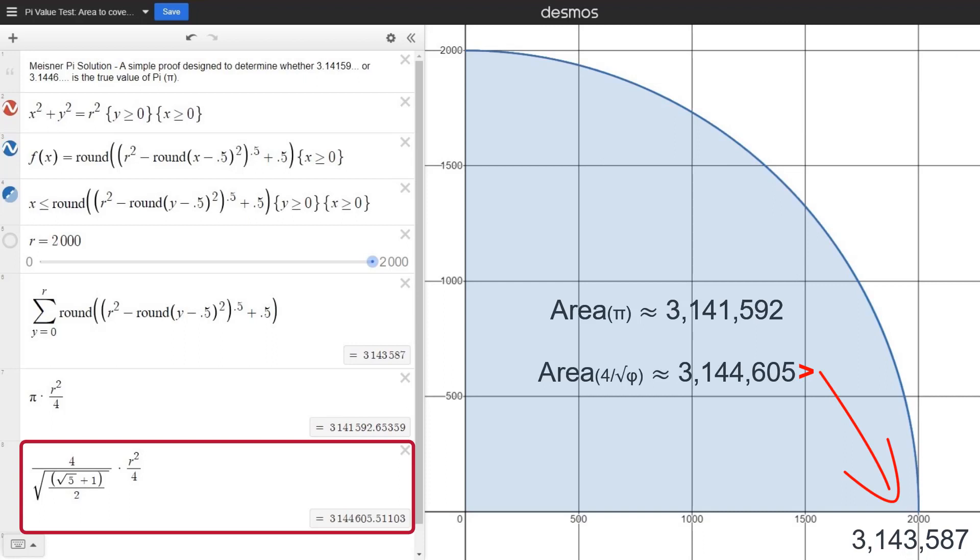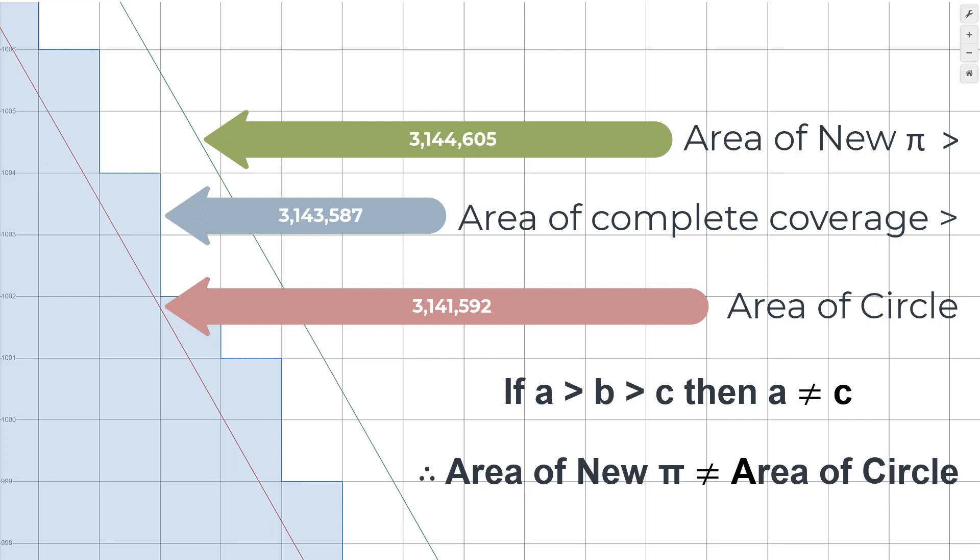So, what does this tell us? This simple model shows us that the area of the circle calculated by this new value for pi is larger than the area that more than completely covers the circle, which, of course, is larger than the area of the circle itself.